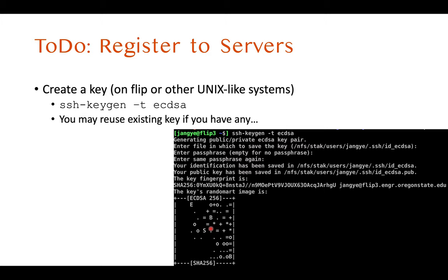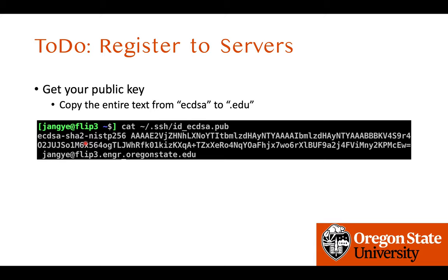After running ssh-keygen, it will generate the key. For the directory to store the key, if you don't know what that means, just press Enter and it will store the key in the default location. After execution, you need to copy out your public key by running: cat ~/.ssh/id_ecdsa.pub — then you will see the entire public key. Please copy the entire text starting from 'ecdsa' to '.edu', because you need to submit that on the scoring server.